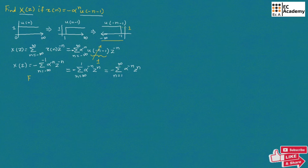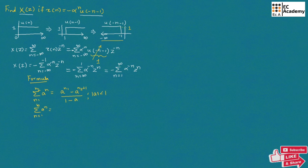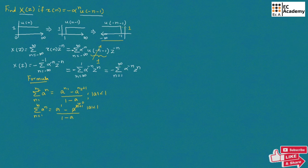Now, let us apply the formula: summation from N1 to N2 of A to the power of N equals A to the power of N1 minus A to the power of N2 plus 1, divided by 1 minus A. This is valid when the magnitude of A is less than 1. Since our summation goes from N equals 1 to infinity, A to the power of infinity plus 1 equals 0, so we get A divided by 1 minus A.